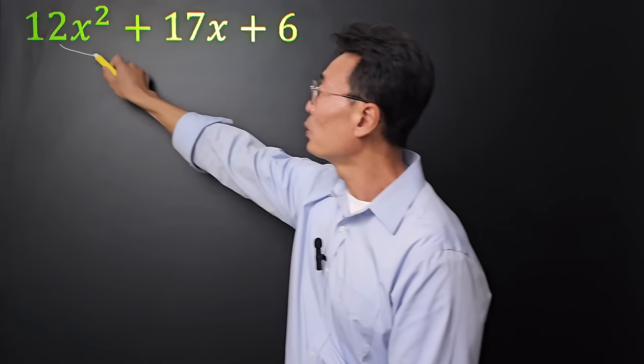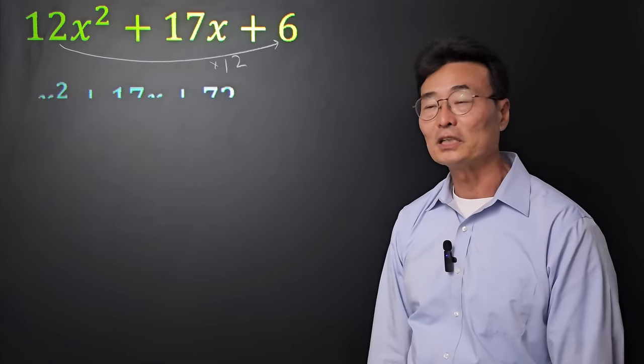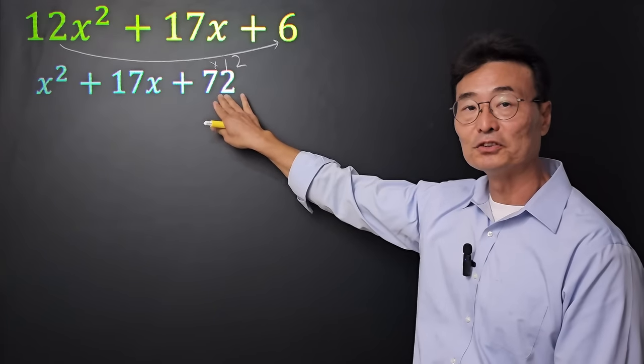First, take that 12, multiply it to the 6. So we go 12 times 6. And the expression becomes x squared plus 17x plus 72.